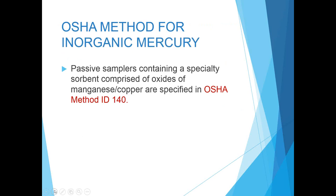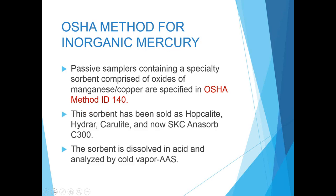Some OSHA methods specify passive samplers containing specialty sorbents for unique target compounds. The inorganic mercury badge has been around as long as I've been at SKC — more than 30 years — and it is specified in OSHA method ID-140. This sorbent has been sold under various trade names, the most well-known probably being Hopcalite. The names have changed throughout the years for commercial reasons, but the material is the same — oxides of manganese and copper — and the sorbent is analyzed by cold vapor atomic absorption.